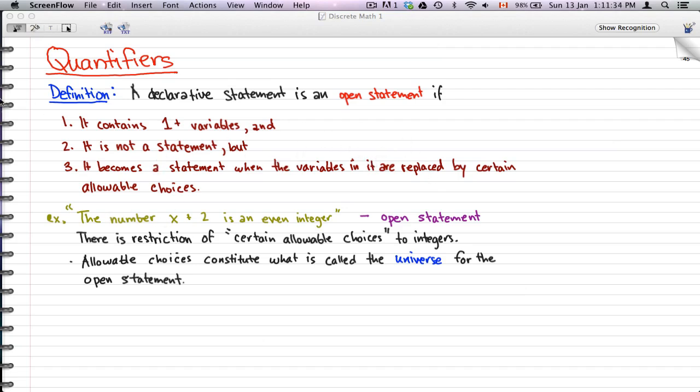For example, 'the number X plus 2 is an even integer.' Now this would be an open statement. There is a restriction of certain allowable choices, and that restriction is restricted to integers because it says the number X plus 2 is an even integer.